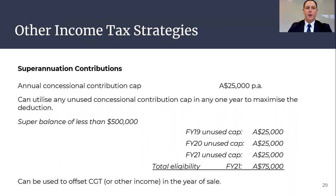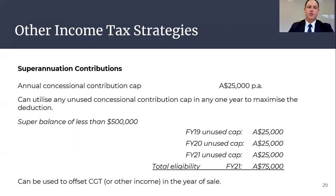There is an annual cap of $25,000 per annum, which increases from 1 July this year to $27,500. However, these contributions can be made on an annual basis to reduce your Australian tax obligations and enhance your overall tax position.